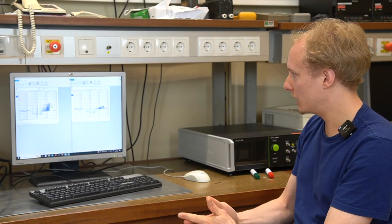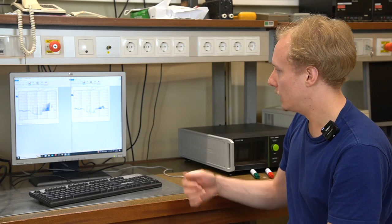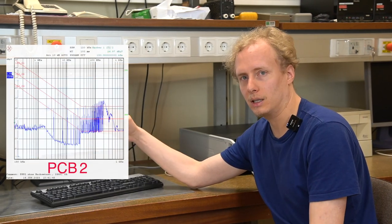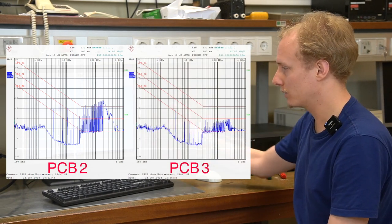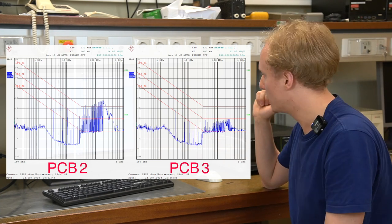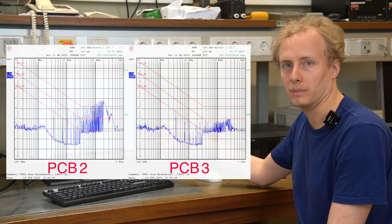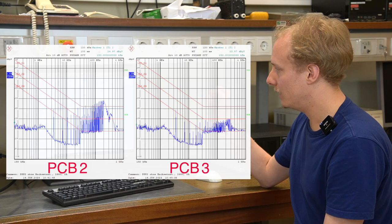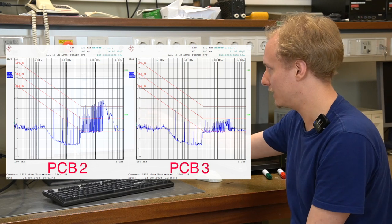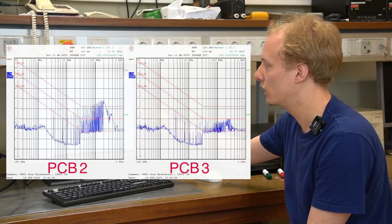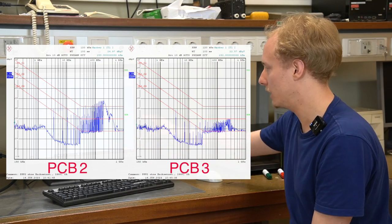So now we have probably the biggest improvement between our test PCBs. On the left side we have PCB2 which has a smaller loop area but now on the right side PCB3 with even closer loop area and the biggest improvement is now we have a ground plane on the bottom. If you compare these two pictures it can clearly be seen that PCB3 on the right side has much lower emissions over the whole frequency range especially in the higher frequencies.